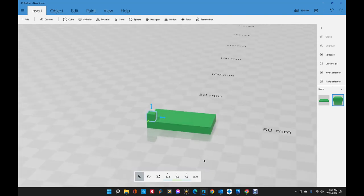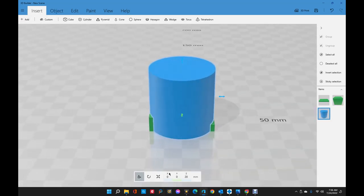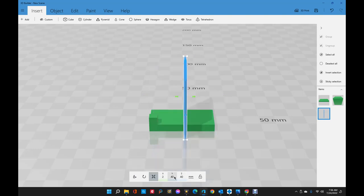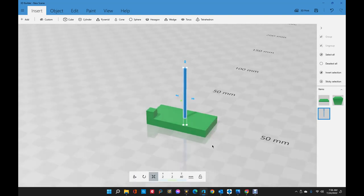Now say we want to put a hole in the center of this assembly center to that cube. Let's insert a cylinder. Let's make that two millimeters. Make that two millimeters by two millimeters. We just want it longer than the total assembly.